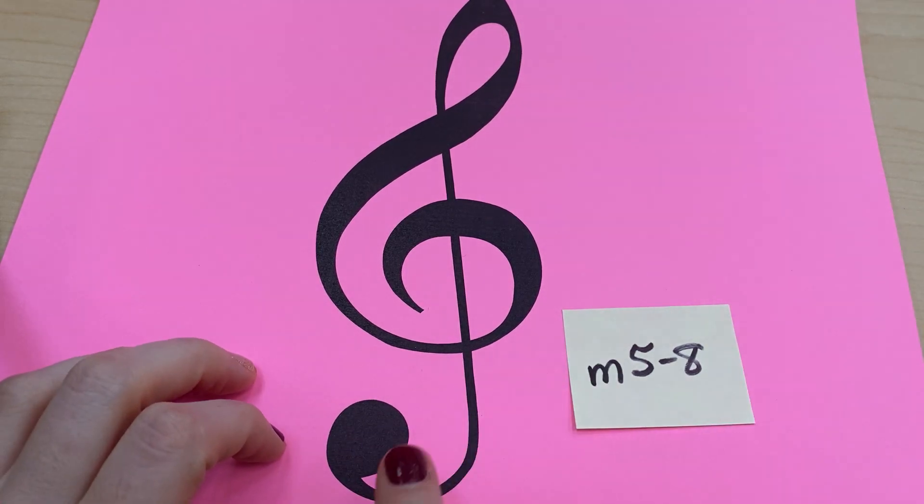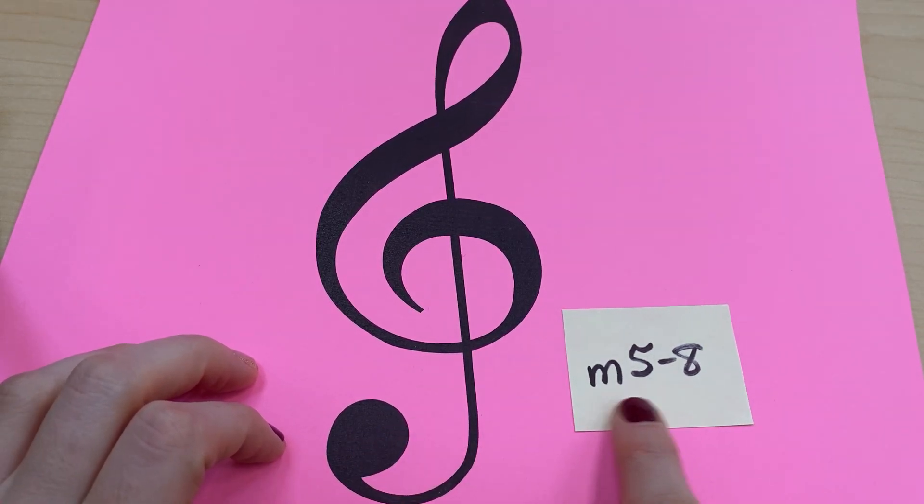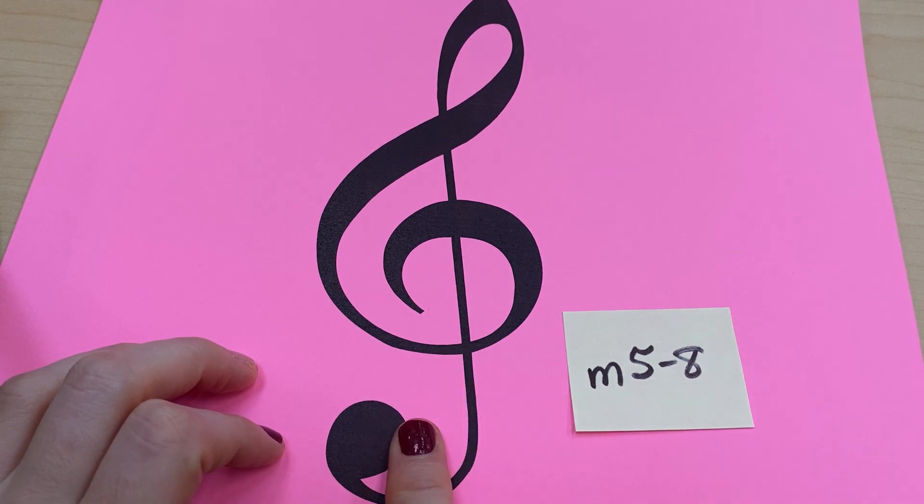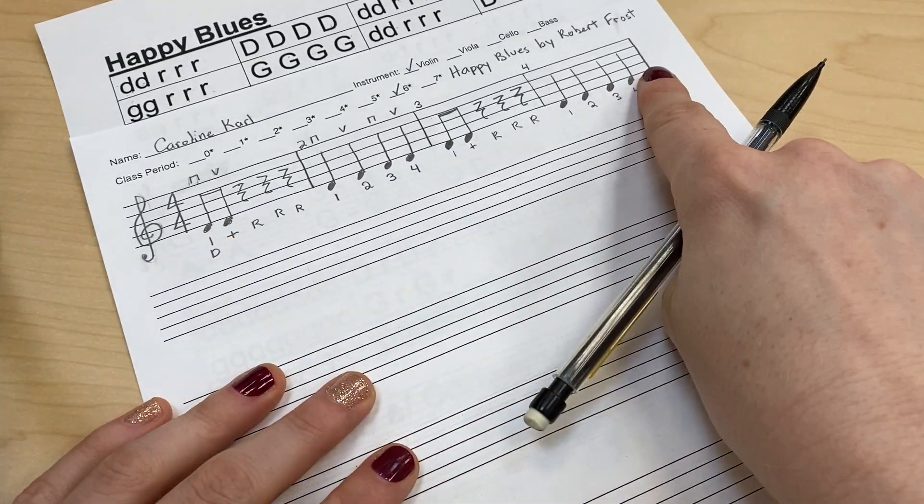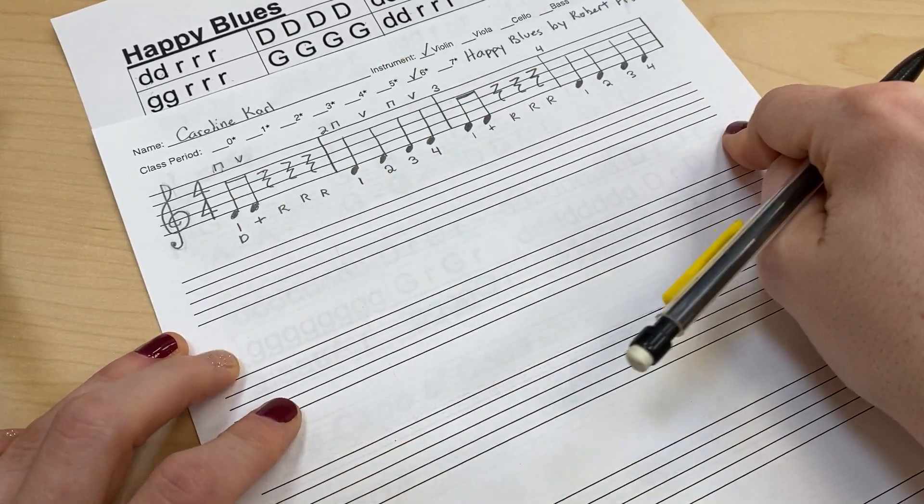All right students, today we are going to do measures five to eight of Happy Blues for violin. So we have our paper where we've already put our first line. We're going to start our second line now.